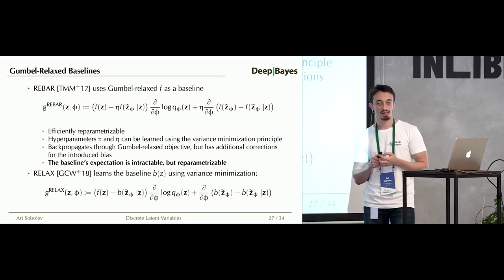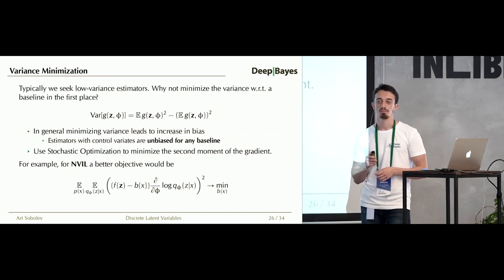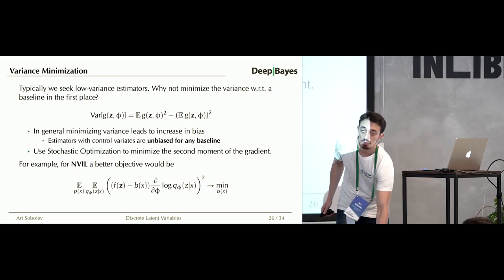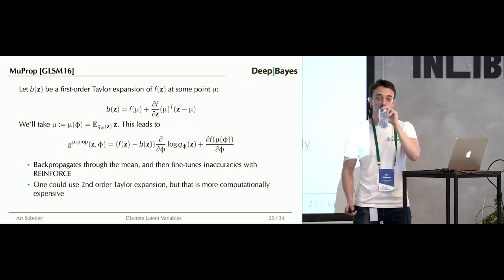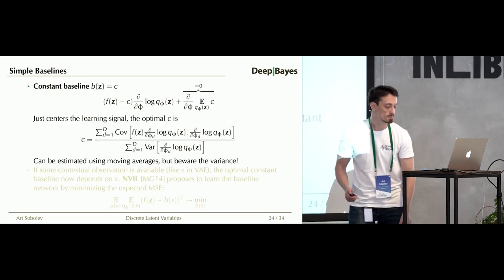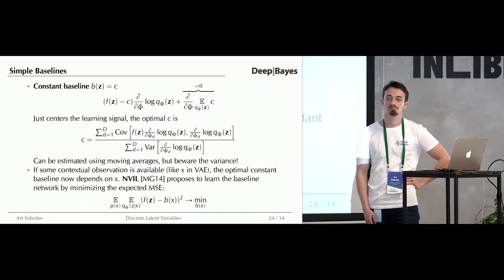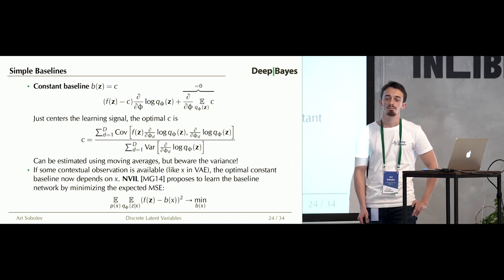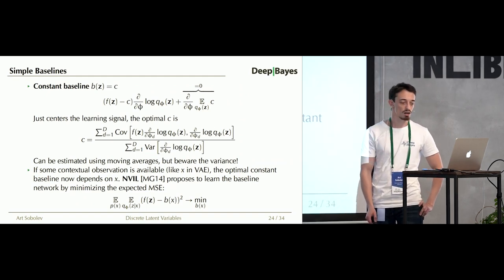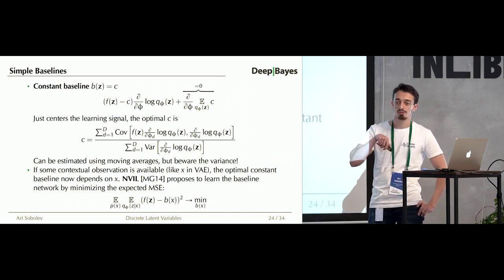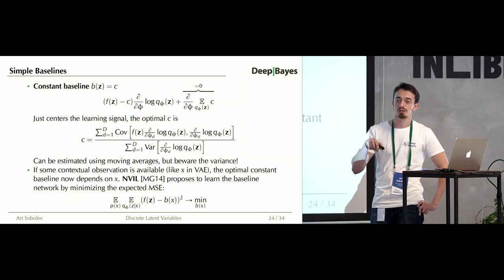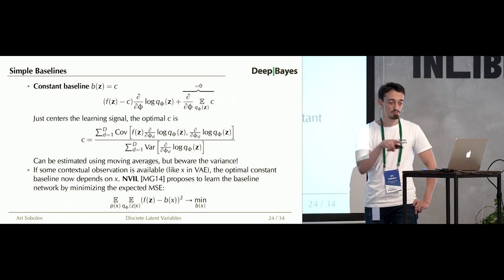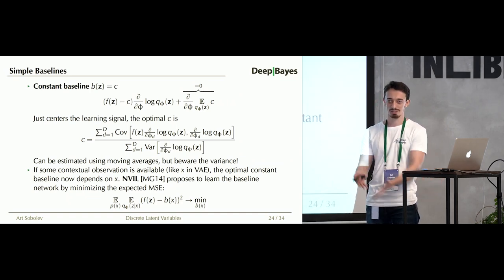There exist more advanced gradient estimators: REBAR and RELAX. REBAR uses Gumbel-relaxed random variables as baselines. A question: won't the baseline network closely follow f(Z) in this objective — so why not use f(Z) directly? The answer: f(Z) depends on Z and we don't know how to compute its expectation analytically, whereas b(x) doesn't depend on Z so its expectation is simply b(x) itself.